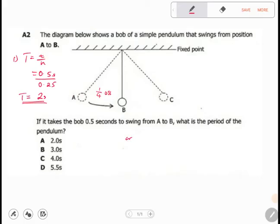Or you can say, if you understand the word period, period is the time taken to make one complete oscillation. Therefore, if it takes 0.5 seconds to make from A to B, to make 1 over 4 oscillations.